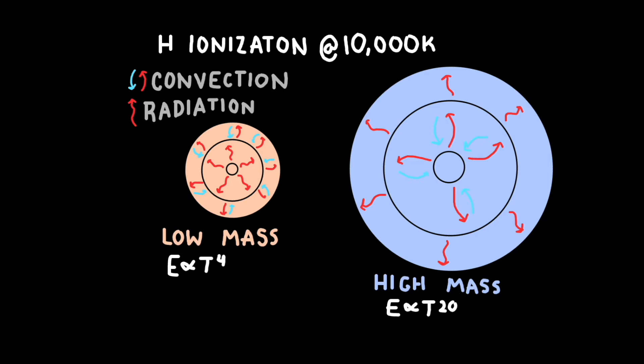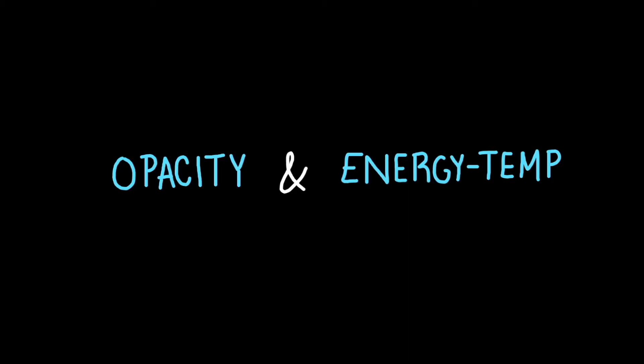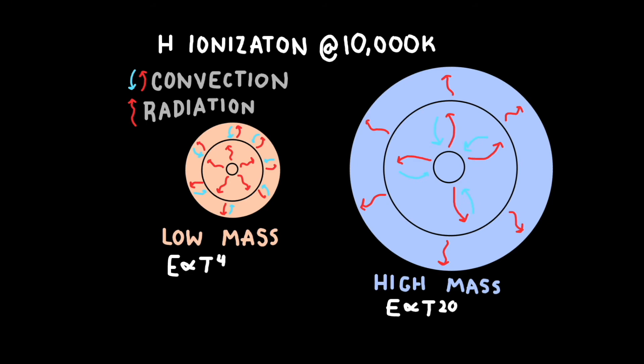Okay, let's review. Most stars have both convective and radiative layers to conduct heat transfer. Where convection and radiation occur within the star is dependent on the opacity and energy temperature relationship within different sections of the star.